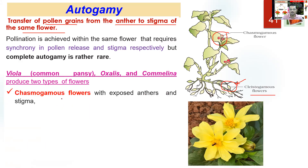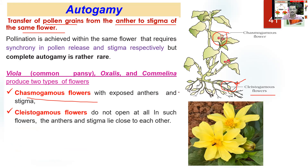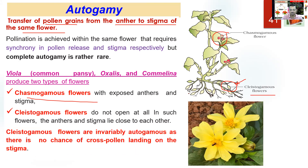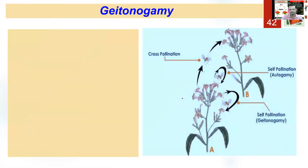In chasmogamous flowers, the exposed anther and stigma allow pollinating agents to come and play their role — transfer of pollen grain can take place. But in the case of cleistogamous flowers, they are invariably autogamous because all means for cross pollen landing are blocked there.